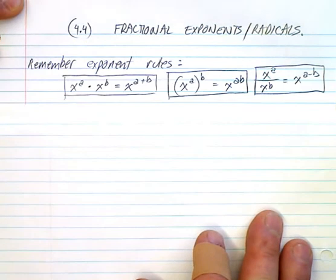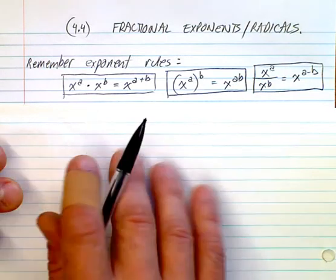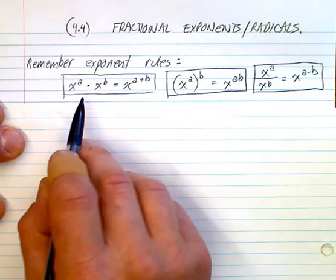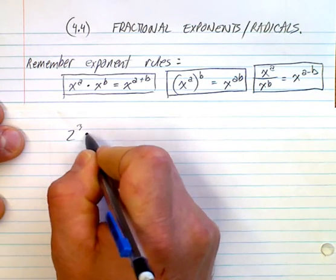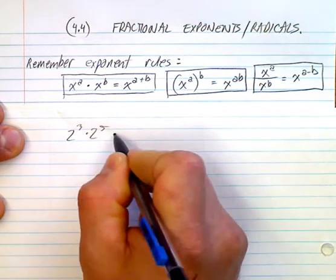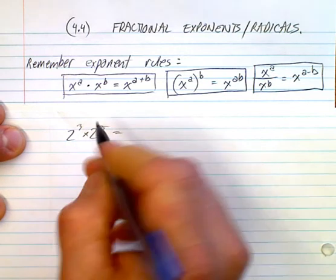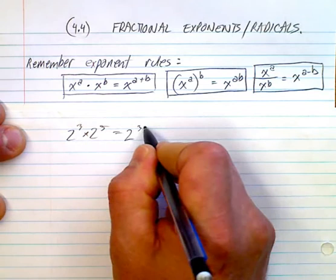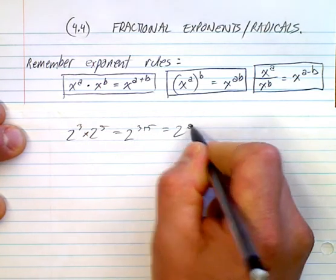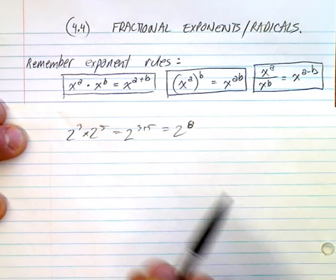First of all, I just want to remind you of the exponent rules, or laws. So here we have: if you're multiplying two numbers that have the same base — that dot means times — so you've got three 2's here and five 2's here, which means you have 2 to the power of 3 plus 5, or 2 to the power of 8. That would be the multiplication law.